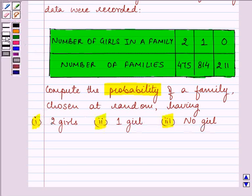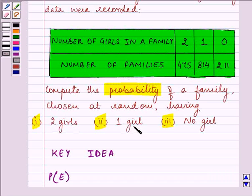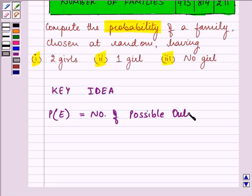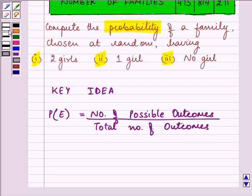Before proceeding with the solution, we should be well versed with the key idea, that is the formula for finding the probability of an event occurring. The formula is number of possible outcomes divided by total number of outcomes. This is the key idea to this question.